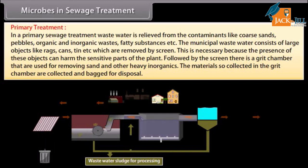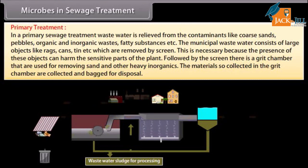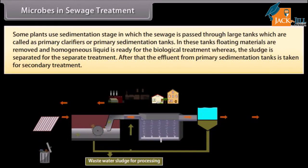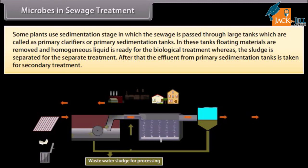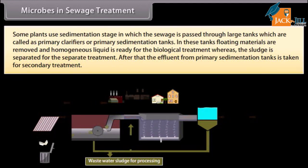Large objects are removed by screen, which is necessary because their presence can harm sensitive parts of the plant. Followed by the screen, there is a grit chamber used for removing sand and other heavy inorganics. Materials collected in the grit chamber are bagged for disposal. Some plants use a sedimentation stage where sewage passes through large tanks called primary clarifiers or primary sedimentation tanks. Floating materials are removed and homogeneous liquid is prepared for biological treatment, while sludge is separated. The effluent from primary sedimentation tanks is then taken for secondary treatment.